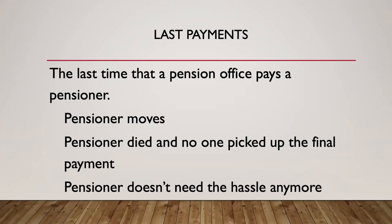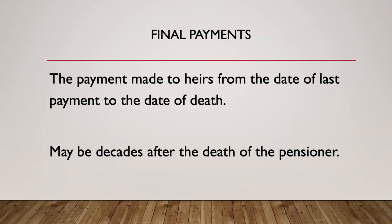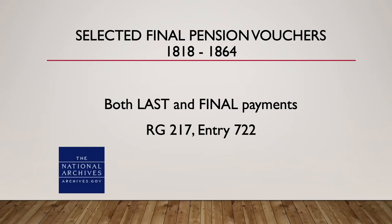Because it's Georgia, that last and final payment will be found on Fold3. A last payment is the last time a pensioner shows up at a pension office. There are lots of reasons — the pensioner may have moved or died, no one picked up the final payment, or the pensioner doesn't need the hassle for eight dollars anymore. The final payment, which is what you hope for, is payments made to heirs from the date of last payment to the date of death. Until 1867, these payments were made to heirs; after 1867 they were made to people most responsible for final care of the individual. These final payments may occur decades after the death of a pensioner. They're found in the National Archives in Record Group 217, Entry 722.